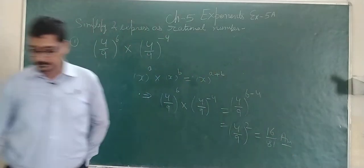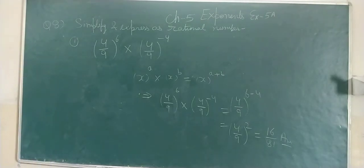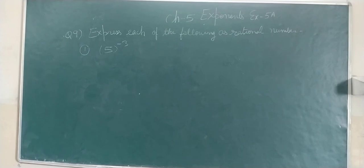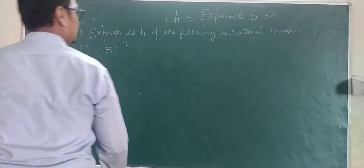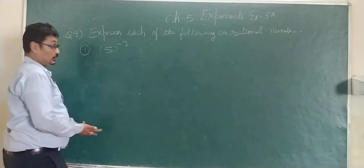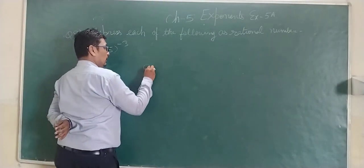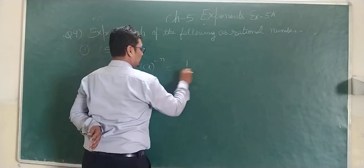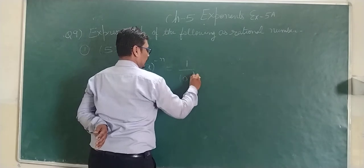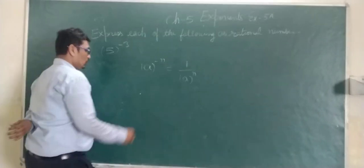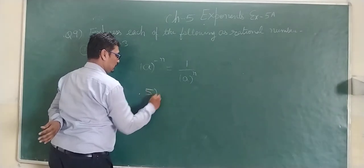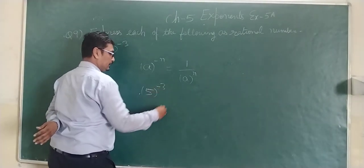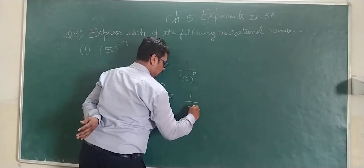This is the answer. Express each of the following as a rational number. First one is 5 raised to the power minus 3. We know a having power minus n can be written as 1 upon a having power positive n. So 5 raised to the power minus 3 can be written as 1 upon 5 cube.